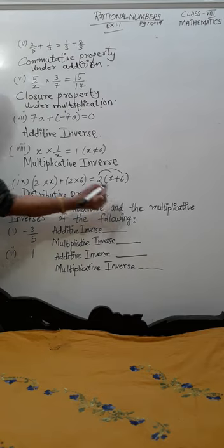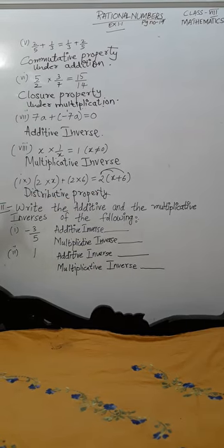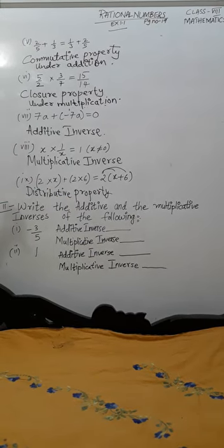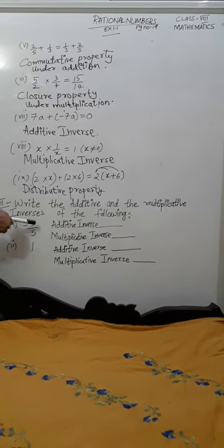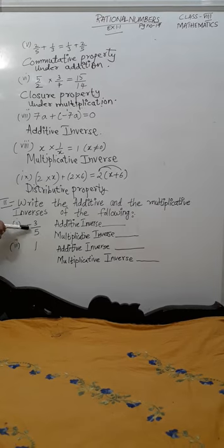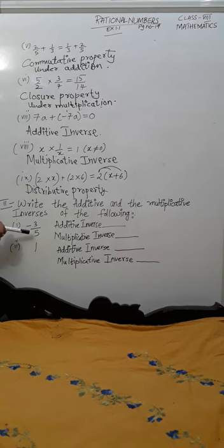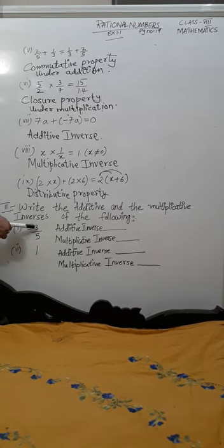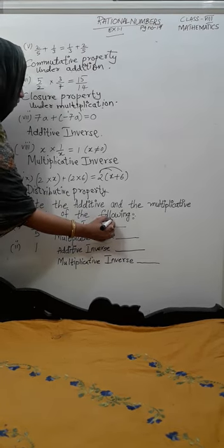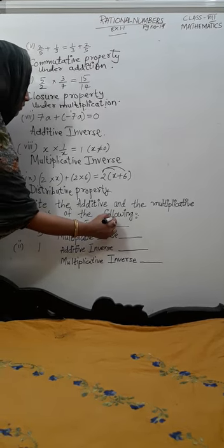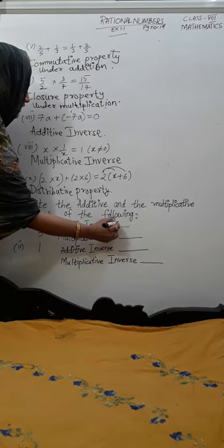The next question. Write the additive and multiplicative inverses of the following. First one is minus 3 by 5. What I told you? To find the additive inverse, we change the sign. So, minus 3 by 5 will become plus 3 by 5.